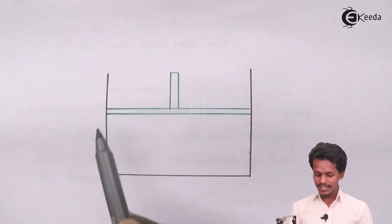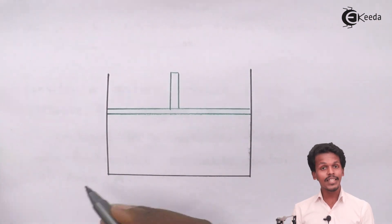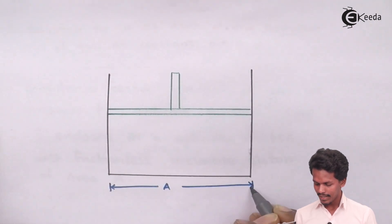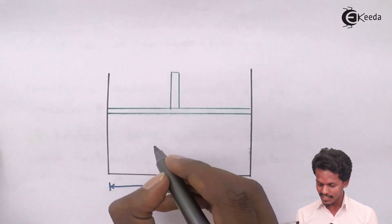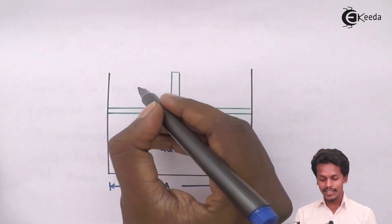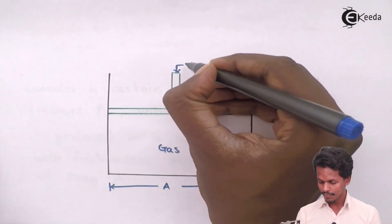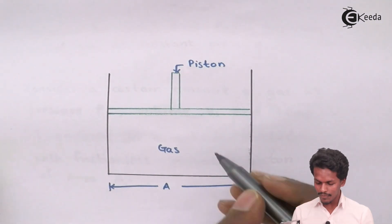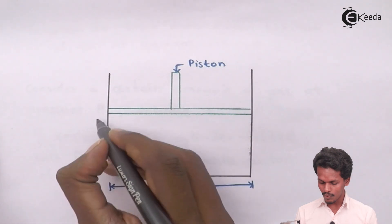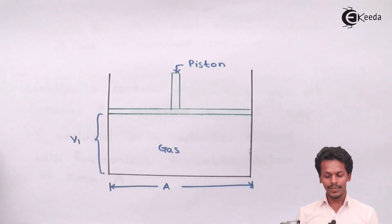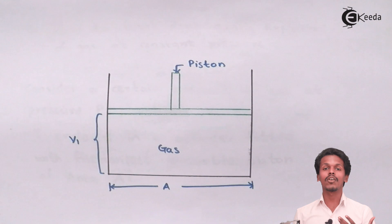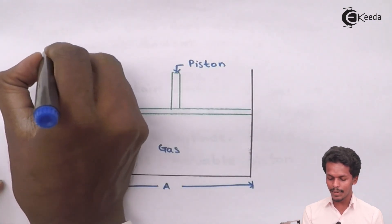This is the diagram that I have drawn. This is the cylinder we have considered with cross-section area A. The gas has been enclosed and is present in it, while this is the frictionless piston. The gas is occupying the volume of V1, so I write it here as V1. The gas mentioned in this case is considered to have a constant temperature.